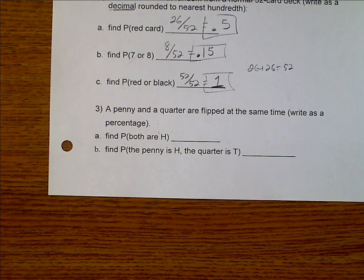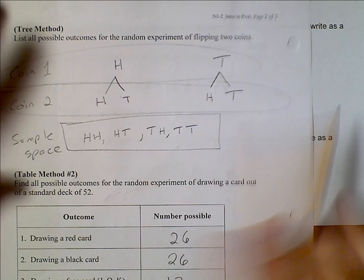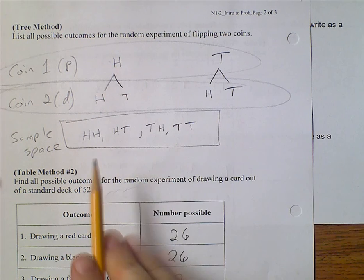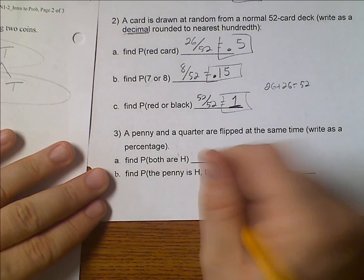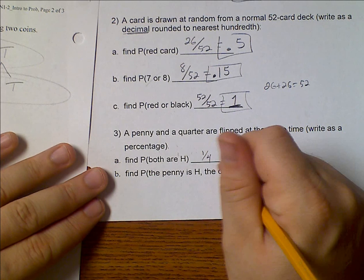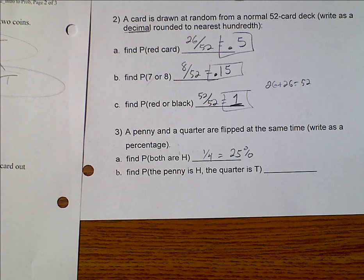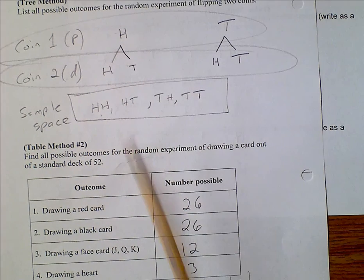And now we're talking here about a penny and a quarter are flipped at the same time. We want to find the probability that both are heads. Well we've got a tree over here. This was our penny, this was our dime. The probability that both are heads would be 1 out of 4. And if we want that as a percentage, you should know that 1 fourth is 25%. Now the probability that the penny is heads and the quarter is tails. Penny is heads, quarter is tails. That would be heads and tails. Well there's only one of those out of 4 total.